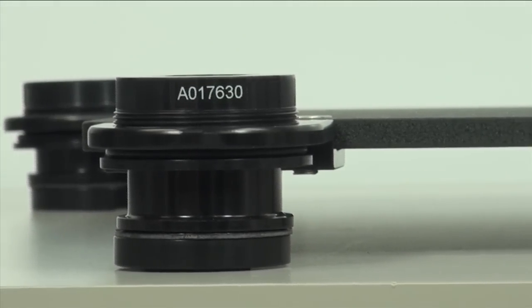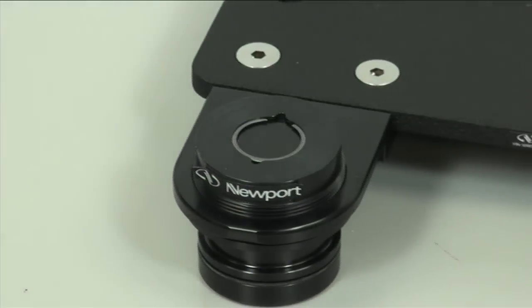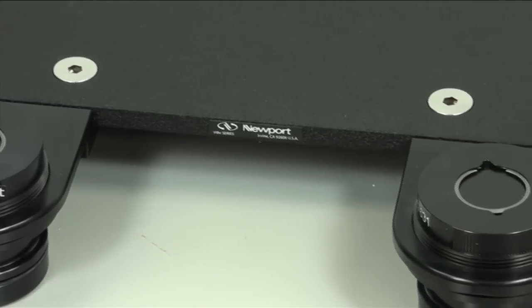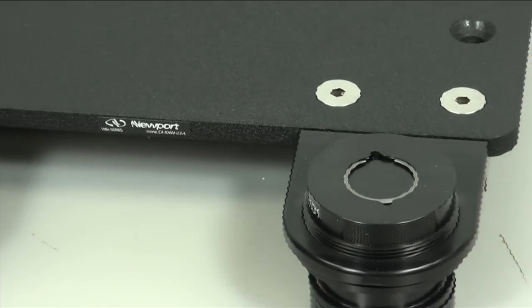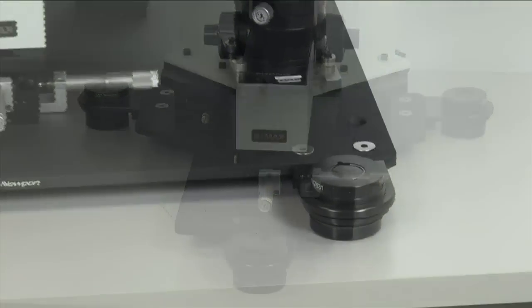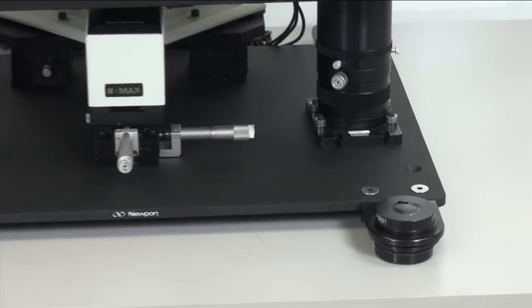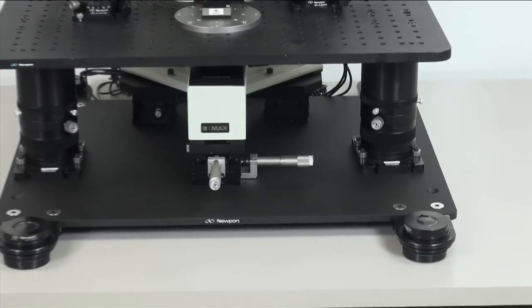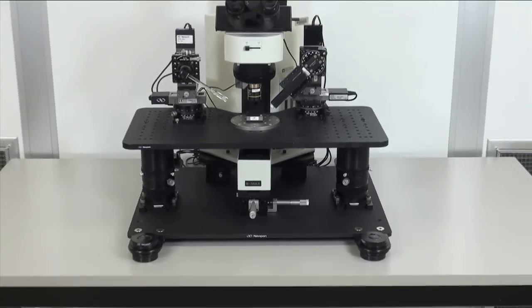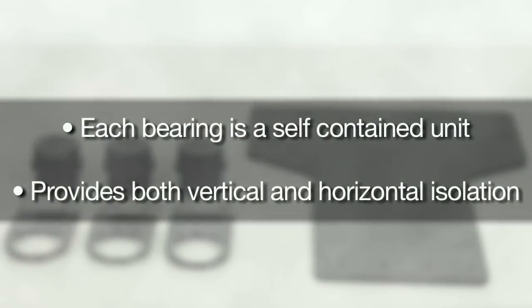In total, Newport offers six models of IB bearings that effectively cover a load range from 10 pounds to 100 pounds. This allows users to configure the proper size platform and bearings in the required locations on the base plate to support and isolate their instrument, even if the load is not uniform, as in the case of microscopes, which are typically heavier in the rear by as much as 50%. Each bearing is a self-contained unit that provides both vertical and horizontal isolation for that specified load range.